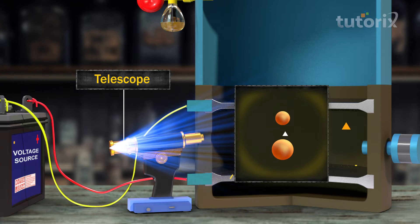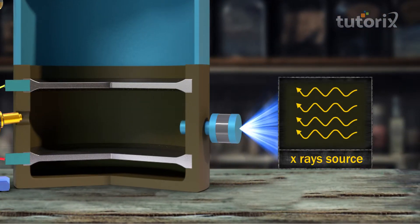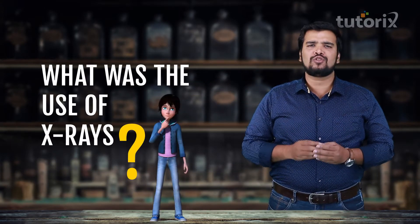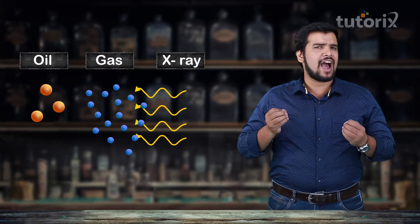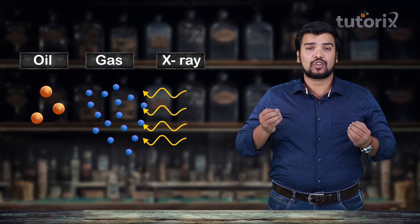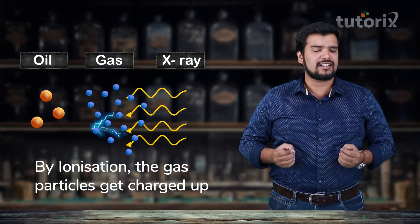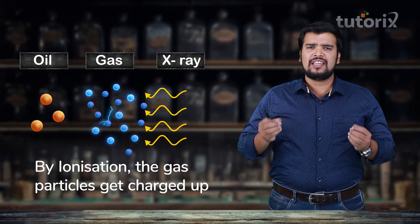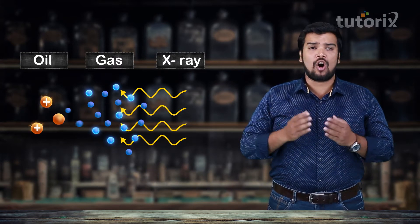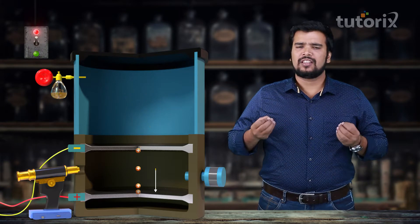In the lower region there was a telescope to observe the movement of the droplets, and a small hole for x-rays coming from an x-ray source. X-rays are high energy radiation so powerful that they can ionize the gas — meaning the gas particles get charged up. When these ionized gas particles collide with the oil droplets, the oil droplets get positively charged.